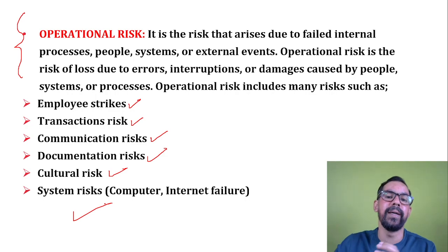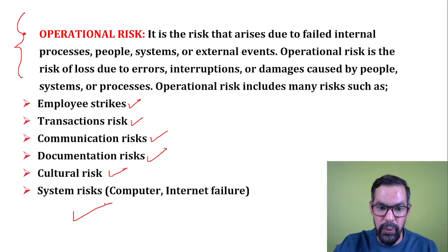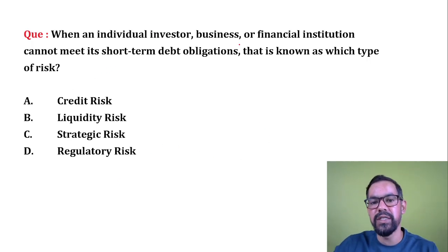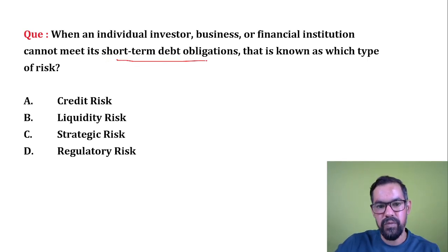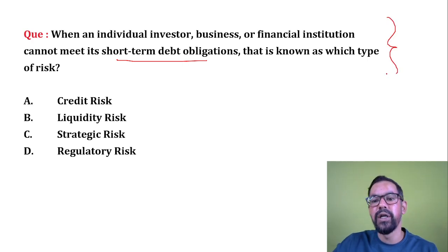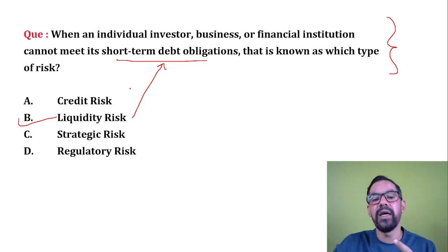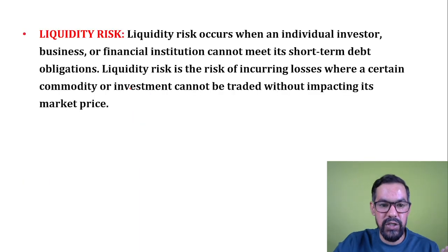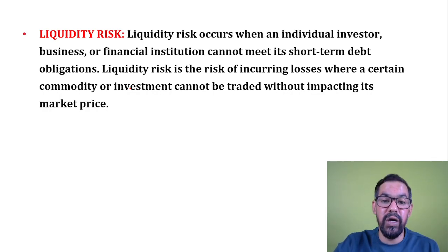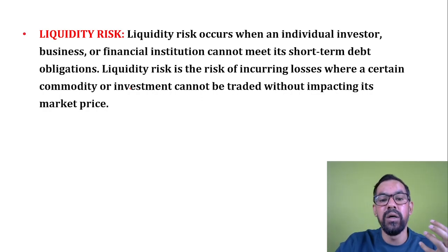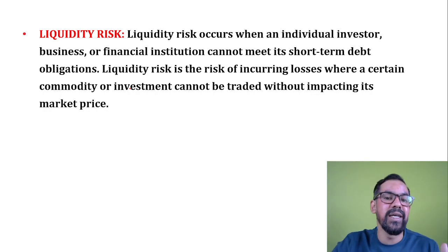Next question: when an individual investor, business, or financial institution cannot meet its short-term debt obligations, that type of risk is called liquidity risk. Credit risk is when a customer becomes a defaulter. Liquidity risk is when these entities are unable to meet their short-term debt requirements. Strategic risk involves strategy failure. Regulatory risk involves compliance changes. Liquidity specifically means when a bank or institution cannot convert their assets into cash or pay their short-term debt obligations.